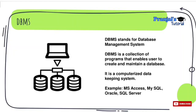So, data is a collection of raw facts and figures. Meaningful processed data is known as information. Data and information are stored in a database, and the software used to create and maintain a database is known as DBMS. I hope you understand these terms. See you in the next video. Thank you for watching — please like and subscribe to my channel.